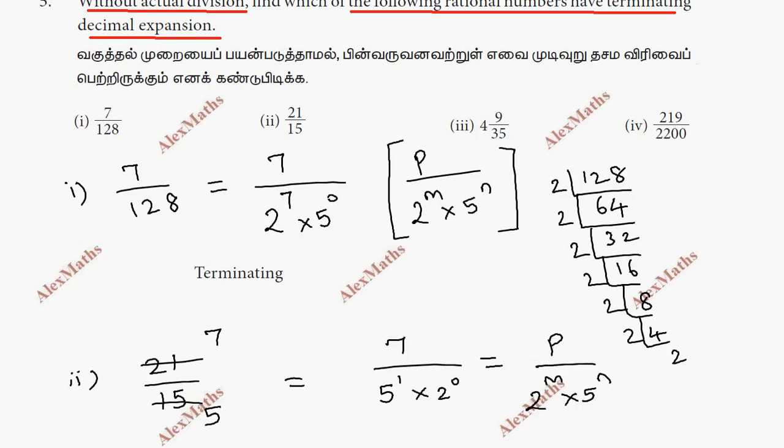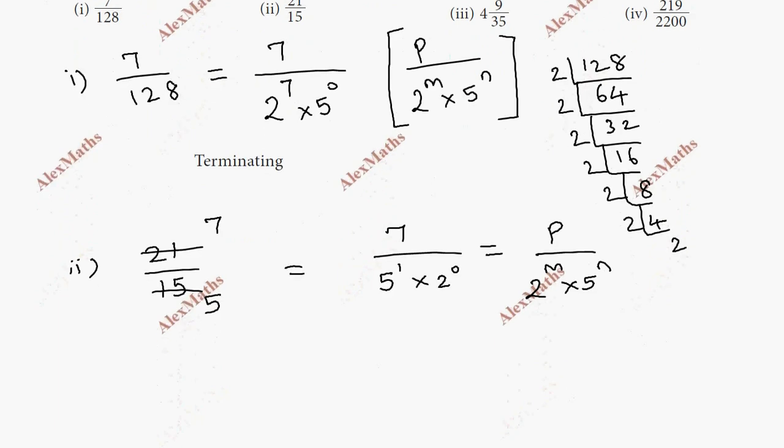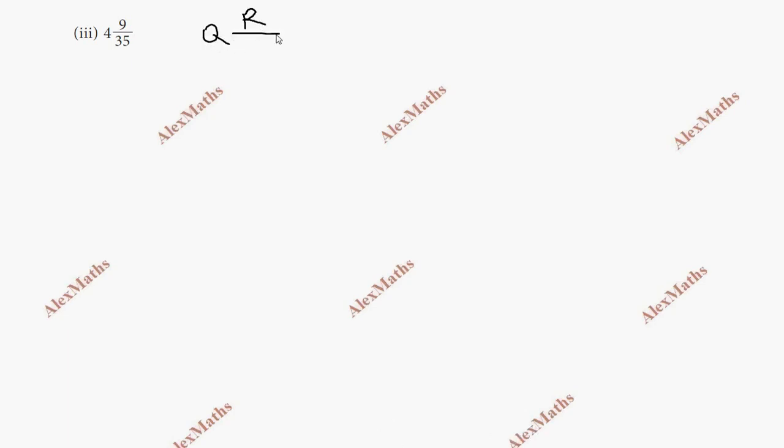The 3 and the denominator cancel. That's why this is terminating. Sub-question 3: Q into r by d. We take Q into d.